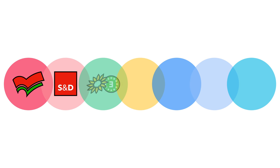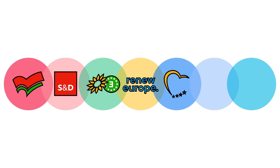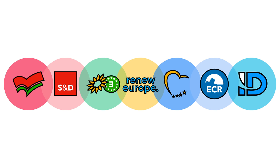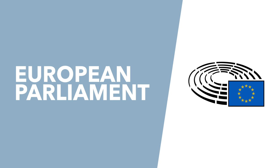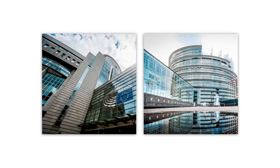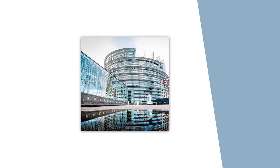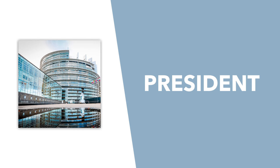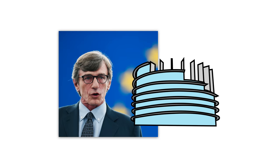From left to right, they are the European United Left / Nordic Green Left, the Socialists and Democrats, the Greens / European Free Trade Alliance, Renew Europe, the European People's Party, the European Conservatives and Reformists, and the Identity and Democracy grouping. There are also non-aligned members who aren't members of any of these political groupings. Unlike most legislatures, the European Parliament has two seats: one in Brussels and another in Strasbourg. The Parliament has a presiding officer, or president — currently David Sassoli.